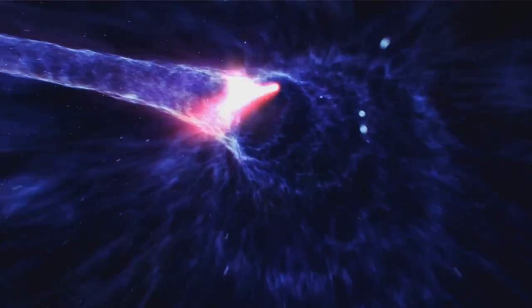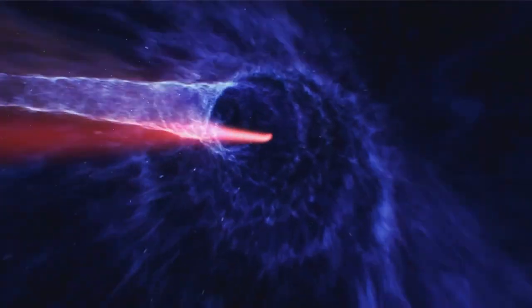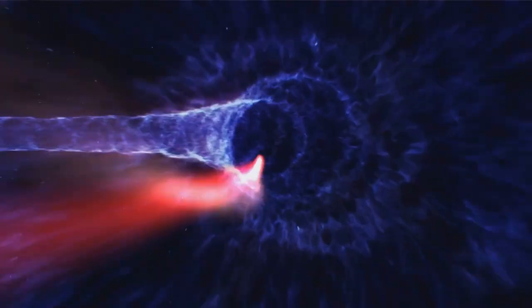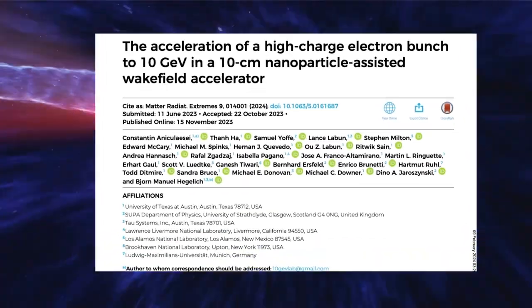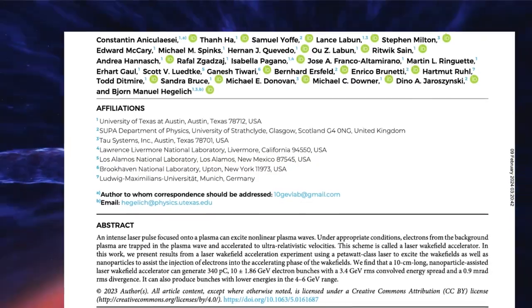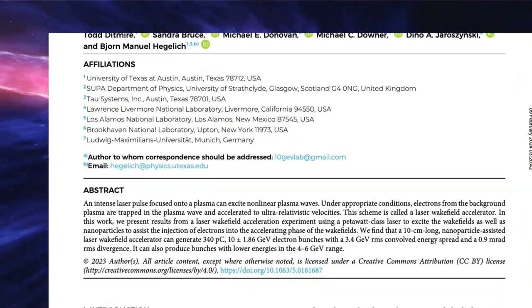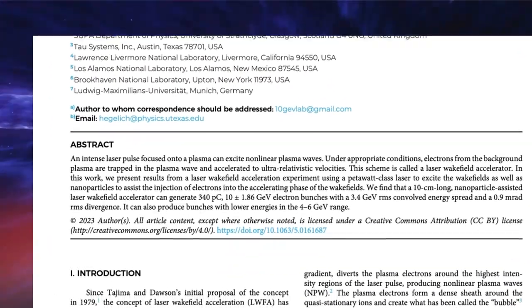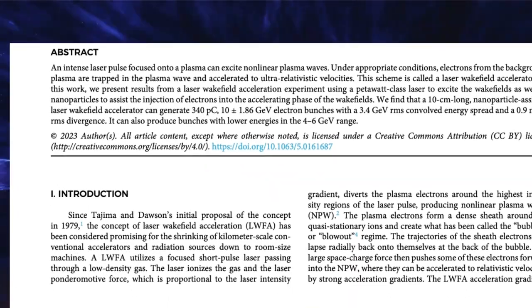For many years, the issue has been how to control the plasma and get a powerful beam while keeping the device small. But now, a team led by Konstantin Anikulaysay and Bjorn Manuel Hegelich at the University of Texas at Austin achieved the milestone of producing a 10 giga electron volt beam in just 10 centimeters. The key innovation was the use of nanoparticles